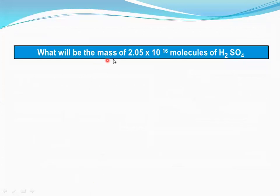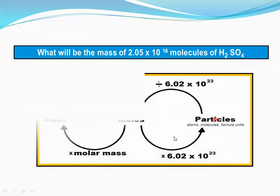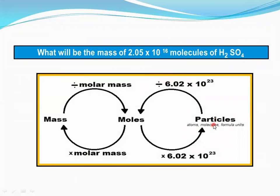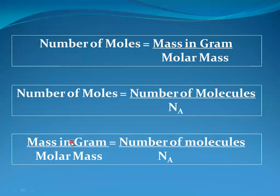Next example: what will be the mass of 2.05 × 10¹⁶ molecules of sulfuric acid? The given number of particles of sulfuric acid is divided by the Avogadro constant to obtain number of moles, which is then multiplied by the molar mass of sulfuric acid to get the mass in grams. Using the same merged formula: mass in grams divided by molar mass equals number of molecules divided by Avogadro constant.